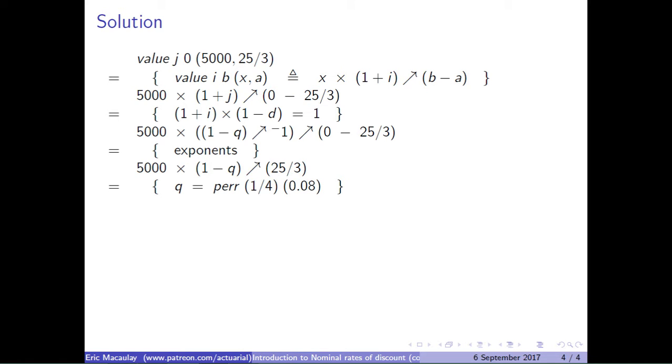Well, we know that the rate of discount per year compounded quarterly is 0.08. So Q would be equal to per of 1/4 of 0.08. That should be per, sorry about that.